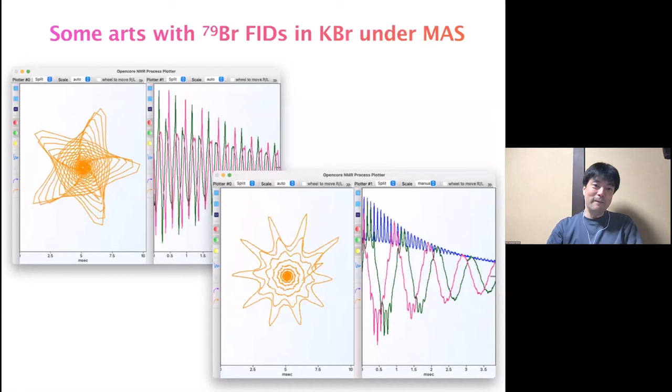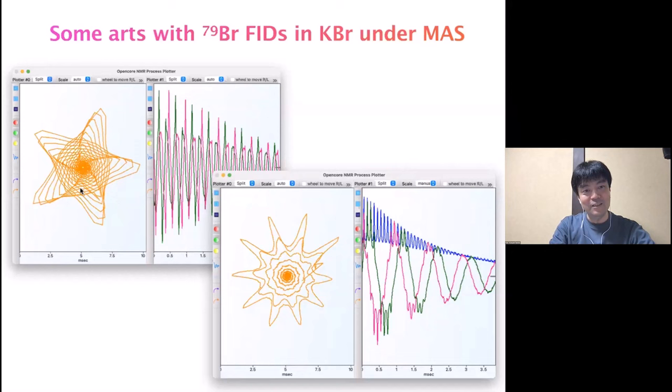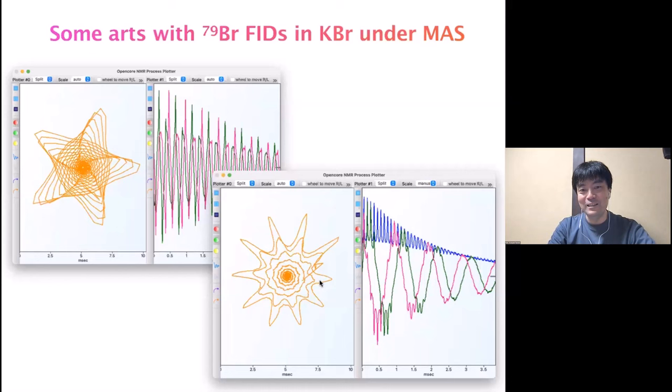This polar plot is particularly interesting when observing rotational echoes in magic-angle spinning experiments, usually done with KBr to adjust the magic angle. If you make the resonance slightly off-reference and then make a polar plot, the rotational echo draws a very nice profile depending on the resonance offset and spinning frequency. Some people ask what's the point — all I can reply is: it's fun.